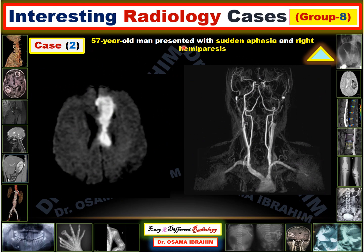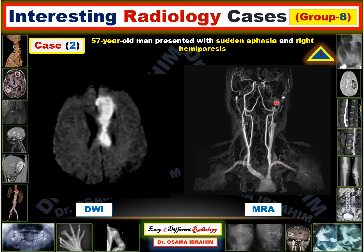Case two. A 57-year-old man presented with sudden aphasia and right hemiparesis. On MRI, the diffusion-weighted image shows a hyperintense lesion at the parasagittal left frontal region near the ventricle. MR angiography of the extracranial vessels shows a defect in continuity — there is no left internal carotid artery visible on the left side.